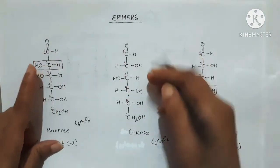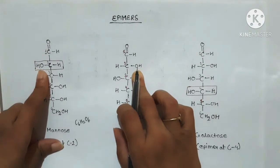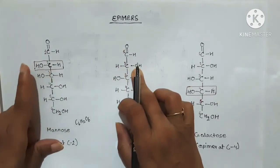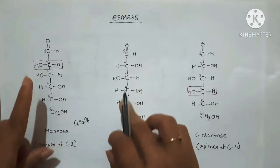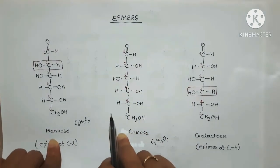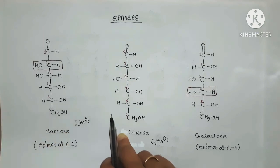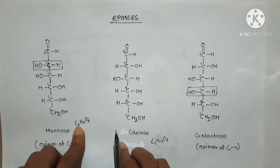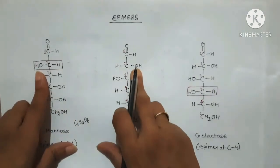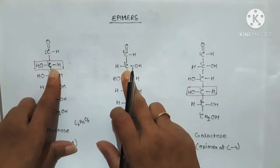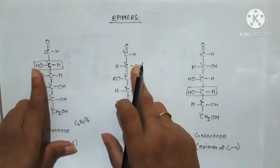So carbon 2 is the asymmetric carbon where the spatial arrangement differs. The hydroxyl group is on the right in glucose and on the left in mannose. Therefore, glucose and mannose are epimers — they are isomers with the same chemical formula but differing in the spatial arrangement at one asymmetric carbon, which is carbon 2.